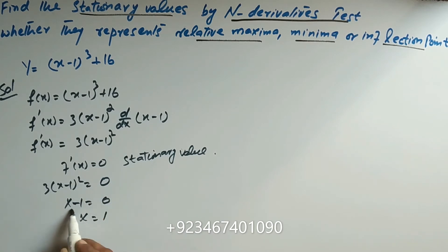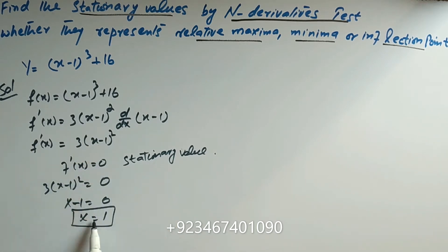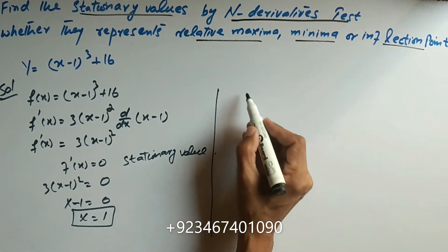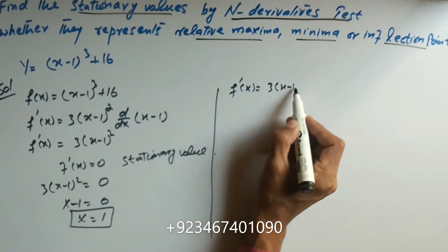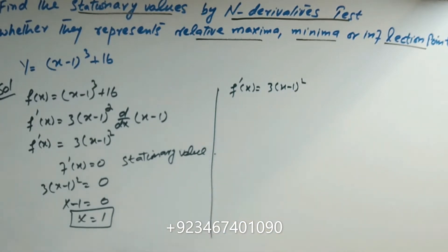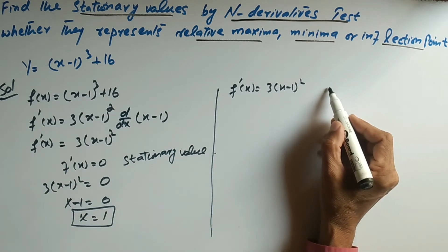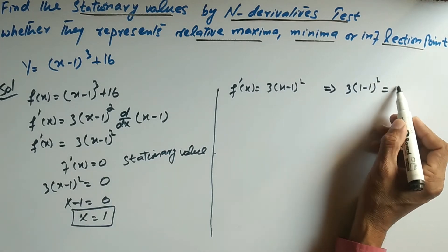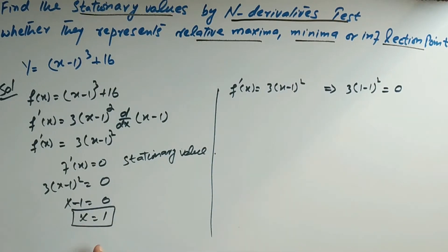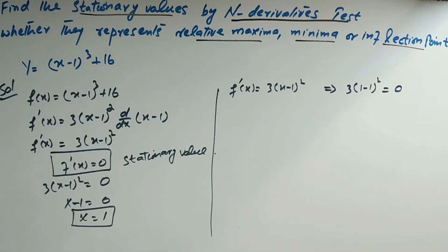When we put x = 1 into the first derivative f'(x) = 3(x - 1)², we get 3(1 - 1)² = 0. So the first derivative equals zero at x = 1, confirming it is a stationary point.